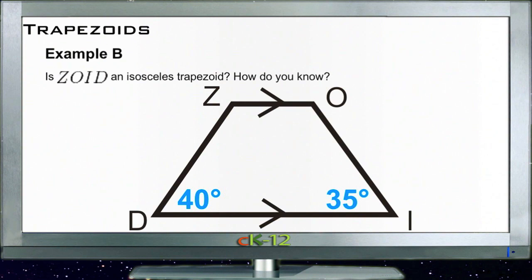So let's take a look at Example B. Example B says is ZOID an isosceles trapezoid, and how do we know? Well, this one is actually really easy because remember, if it's an isosceles trapezoid the two base angles have to be equal. And since this one is 40 degrees and this one is 45 degrees and this one is 45 degrees, this obviously cannot be.